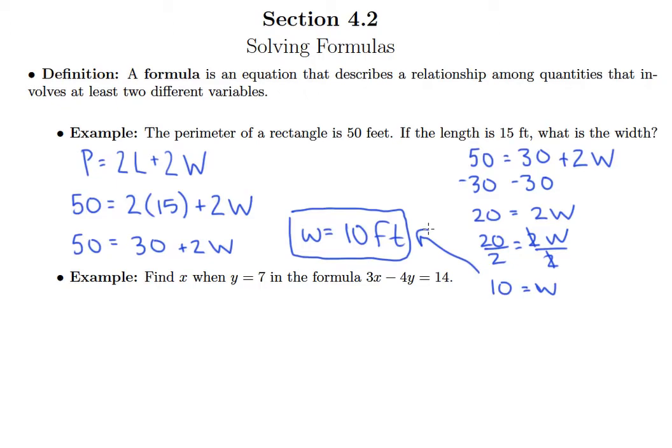The next example says find x when y equals 7 in the formula 3x minus 4y equals 14. Here we write out the formula again but instead of writing y we place 7 in for y.